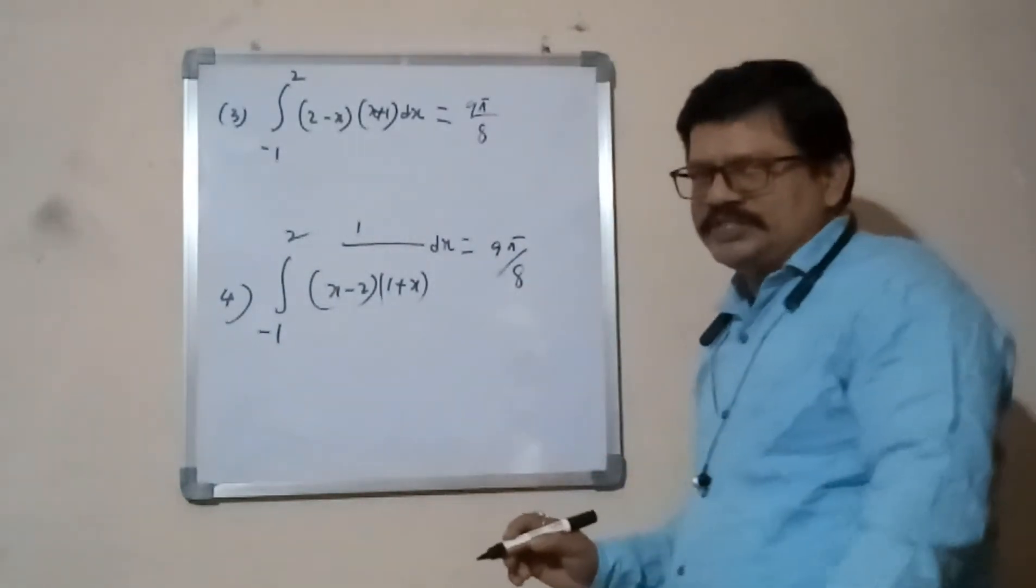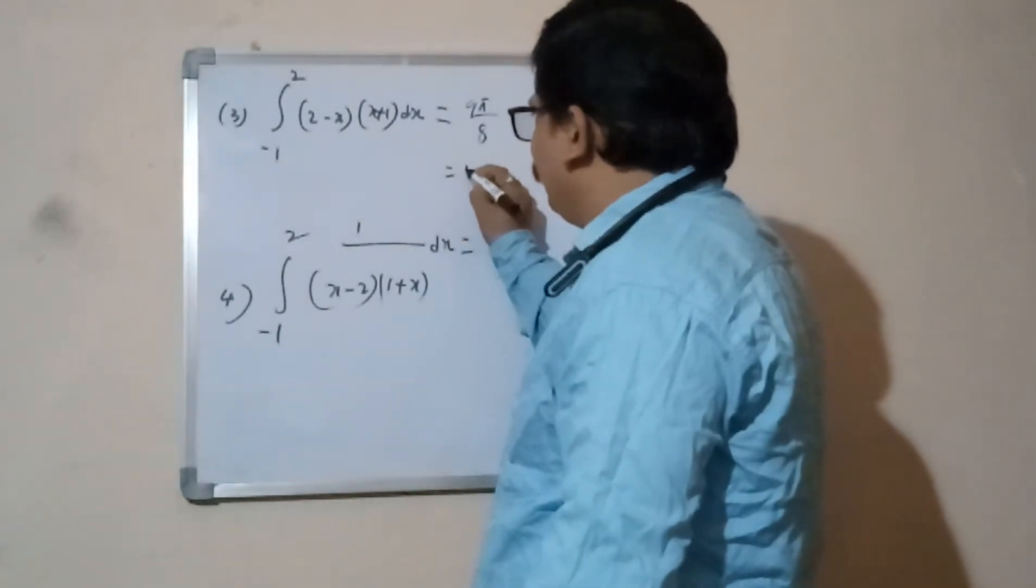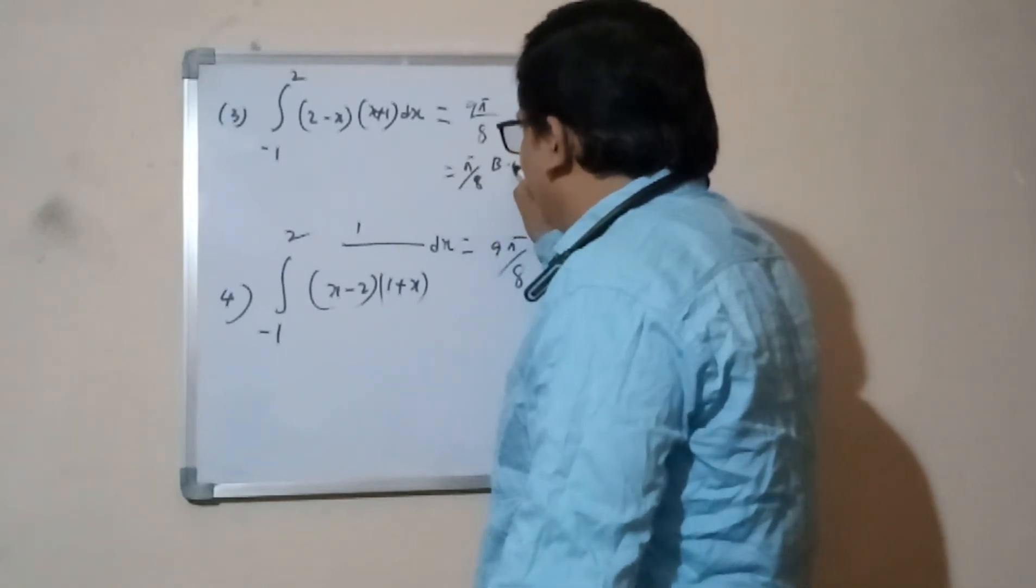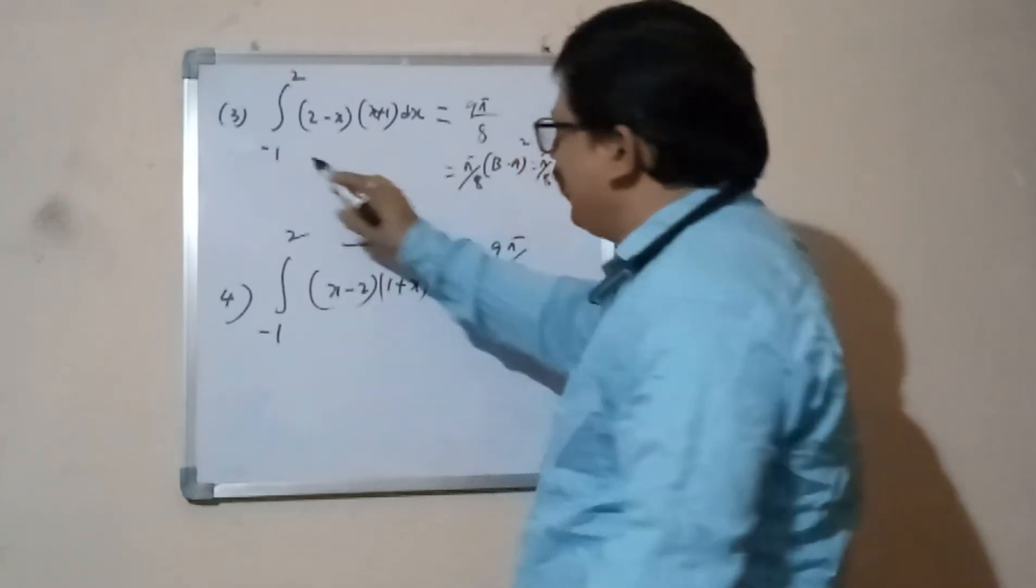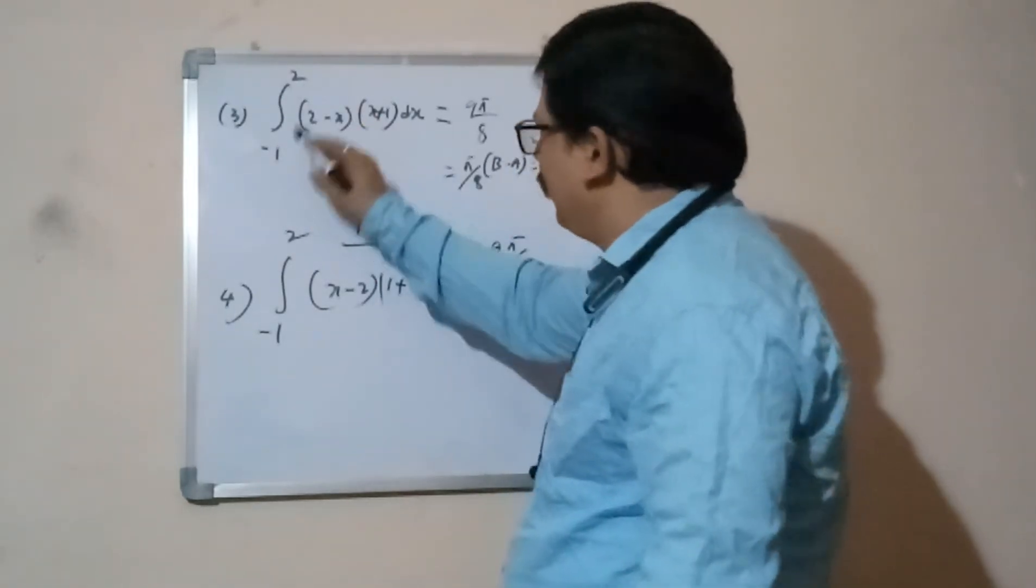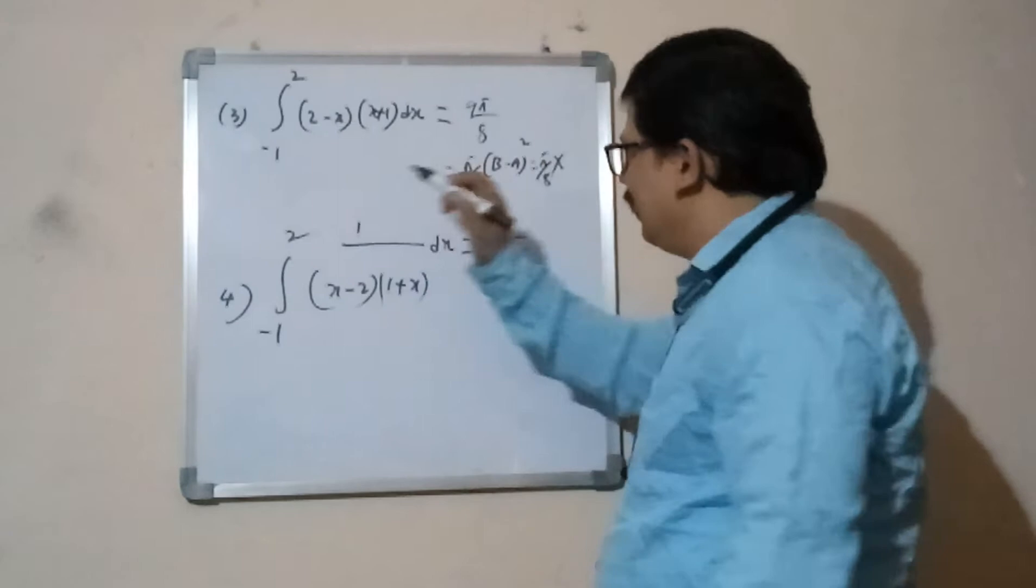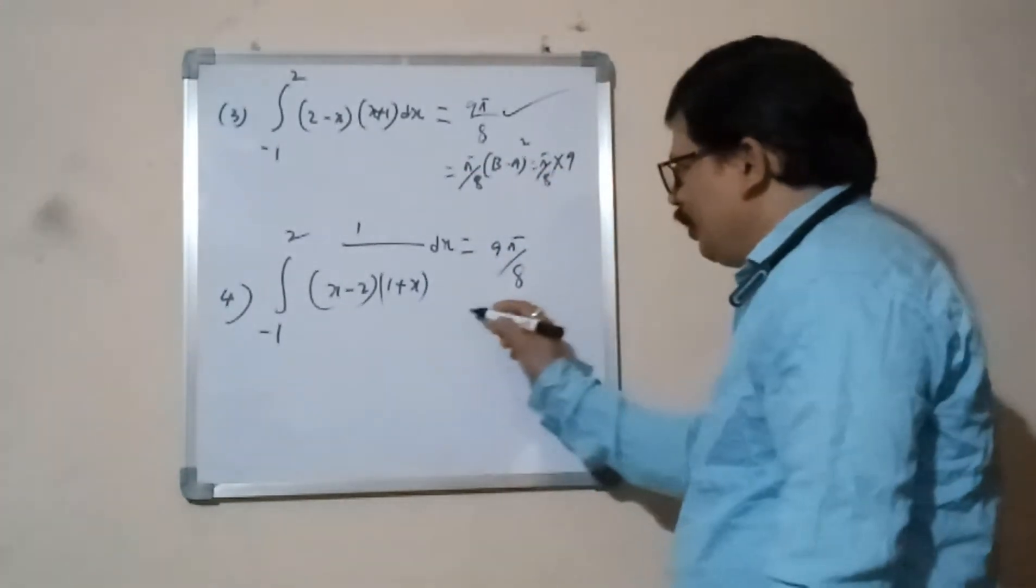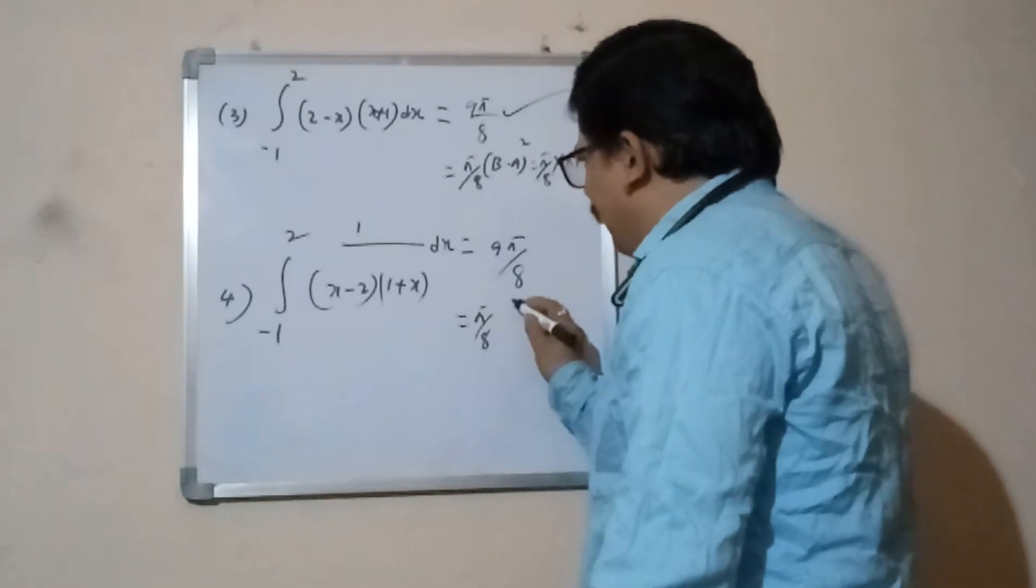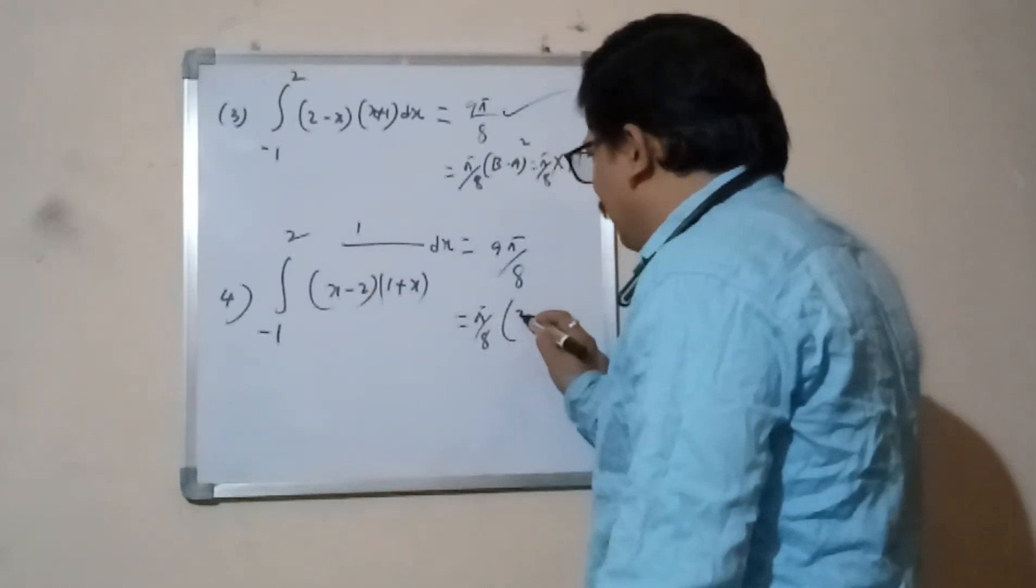Fourth one: integral -1 to 2, 1 by (x-2)(1+x) dx. This one also I will tell. Dead easy, within one second. Normal process means minimum 3 to 5 seconds time taking. Answer I will tell directly: 9/5 by 8. This one also one second: 9/5 by 8.